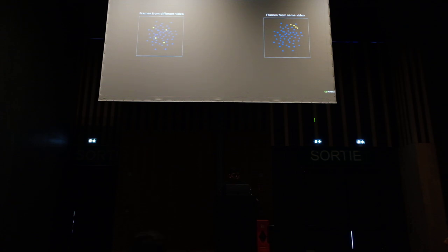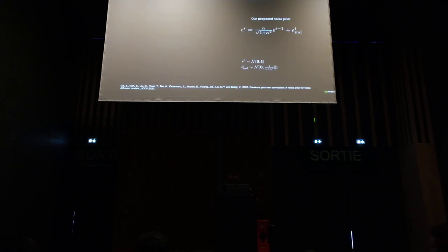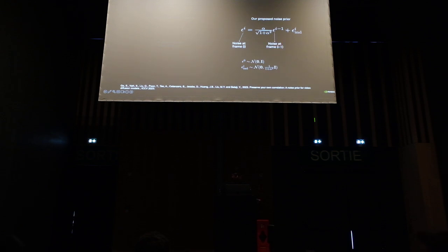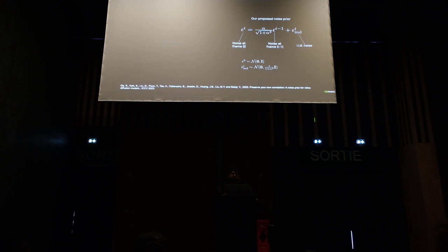This difference becomes very clear when you look at both plots side by side. What we propose to do is to modify the noise prior in the diffusion models. In conventional diffusion models, you have noise maps which are all independent — they are IID, so the noise in frame i and frame j are independent. In our new proposed noise prior, we make sure that frame i and frame j are correlated. The way we model the correlation is with this equation: noise at frame i is a linear combination of noise at frame i minus one with some independent noise. The parameter alpha here controls how much correlation there is between different noise frames.